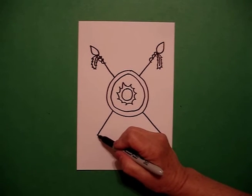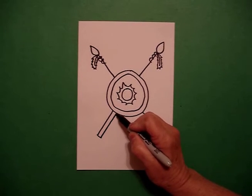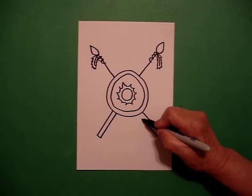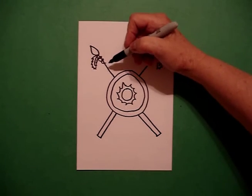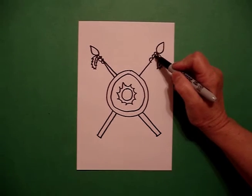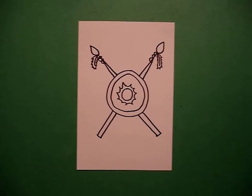the last thing I do, come down to the bottom, draw a little straight line, straight line up, little straight line, straight line up. Come over to the top, straight line, straight line. And now we're ready to color.